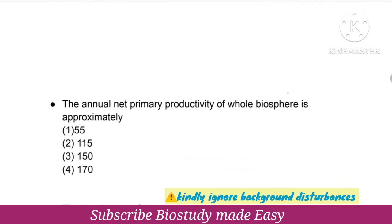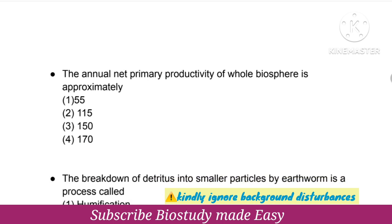The annual net primary productivity of the whole biosphere is approximately? The options are 55, 115, 150, and 170. The right option is 170.